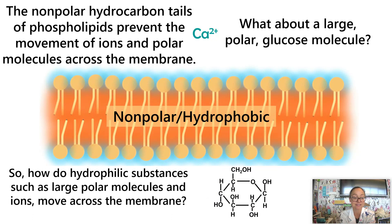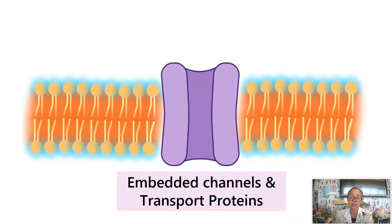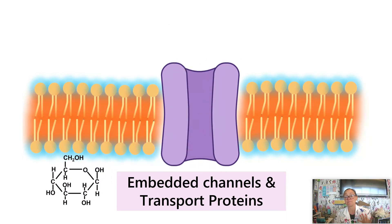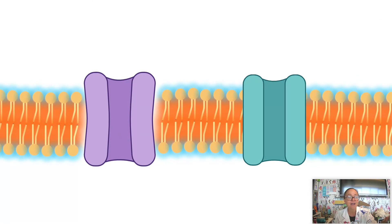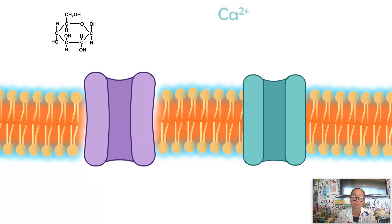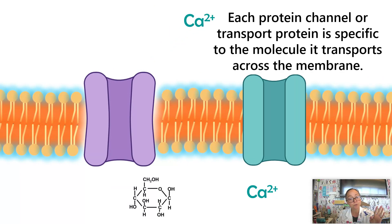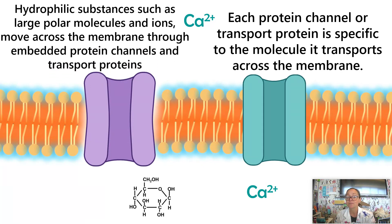So how do hydrophilic substances such as large polar molecules and ions move across the membrane? Recalling from our plasma membrane video, there are proteins embedded within the membrane — channel proteins and transport proteins — and these allow polar substances or ions to pass through. Each type of ion or polar molecule has a protein channel specific to that molecule: glucose goes through glucose channels, calcium goes through calcium channels. Each protein channel is specific to the molecule that crosses through it.